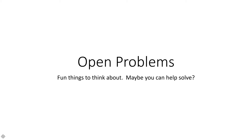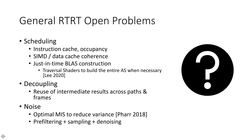For the last section, let's discuss open problems. There's a myriad of general real-time ray tracing open problems from the scheduling side — instruction cache, occupancy, data cache coherence — or things like just-in-time BLAS construction, as explored in the traversal shaders paper by Lee to build the entire acceleration structure when necessary. There's also decoupling: reusing intermediate results across paths and frames to reduce noise, optimal MIS to reduce variance, and the whole end-to-end pipeline from pre-filtering, sampling, and denoising.